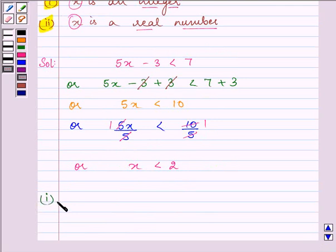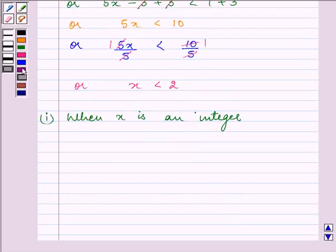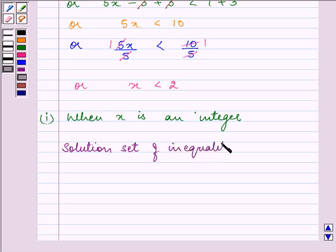So for the first part, when x is an integer, then the solution set of the inequality is less than 2. That means it will include elements 1, 0, minus 1, minus 2, and so on.